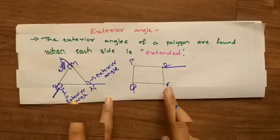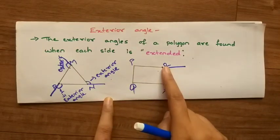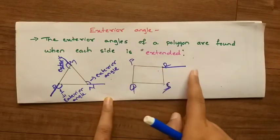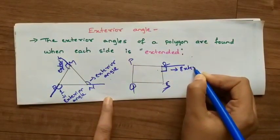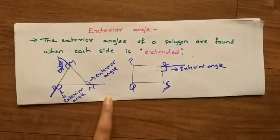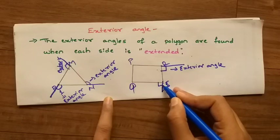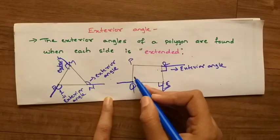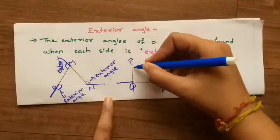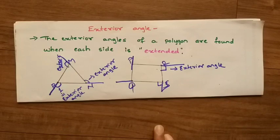In the rectangle example, we again have four sides: PQ, QS, SR, and RP. When each side is extended, it forms an exterior angle. Side PR is extended — that's an exterior angle. Side RS is extended — another exterior angle. Side QS extended — another. Side QP extended — another. So the rectangle has four sides, four vertices, and four exterior angles.